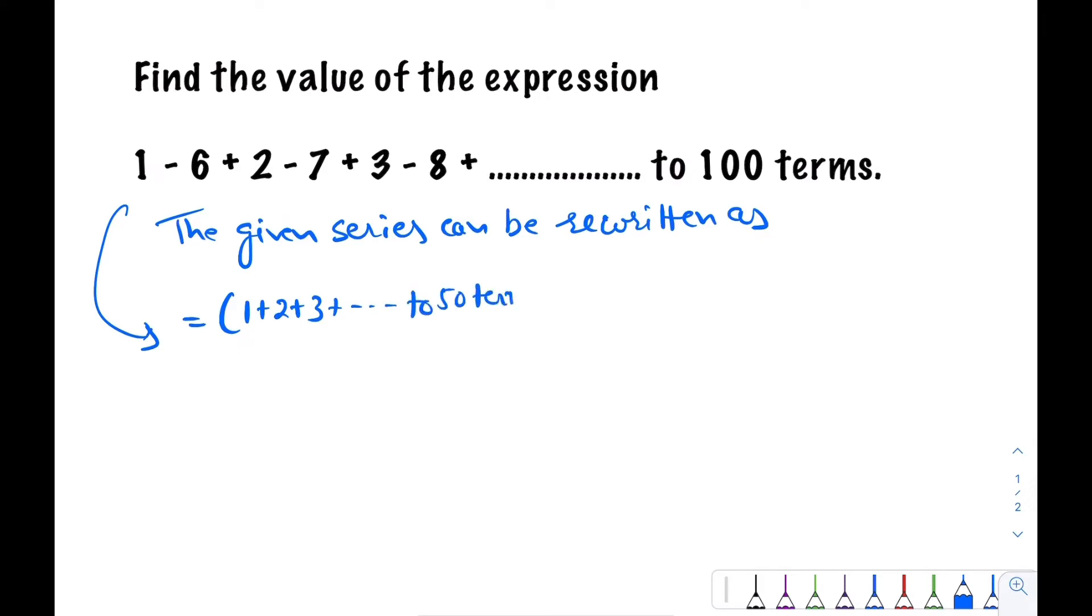minus (6 + 7 + 8 + ... and so on to 50 terms). Here both series, 1 + 2 + 3 up to 50 terms and 6 + 7 + 8 plus and so on to 50 terms, both are in AP.